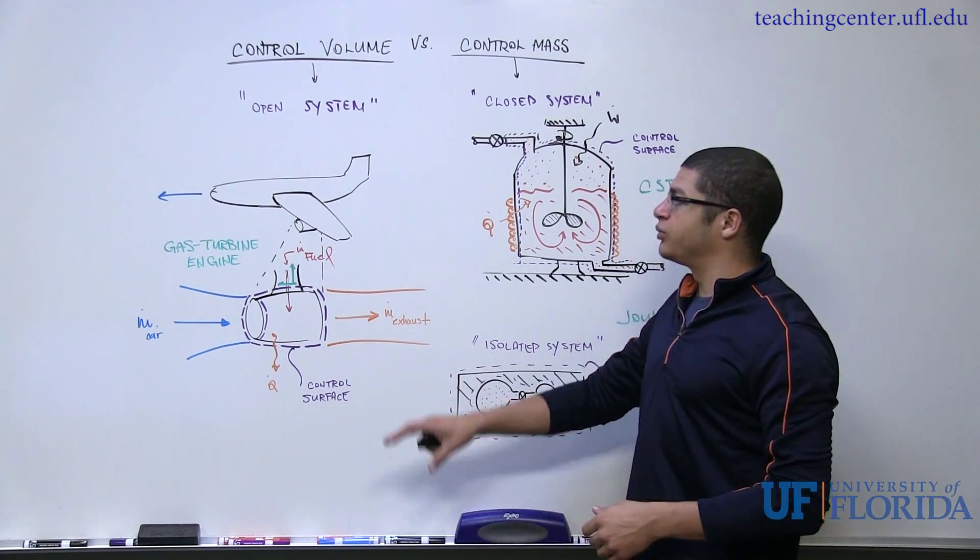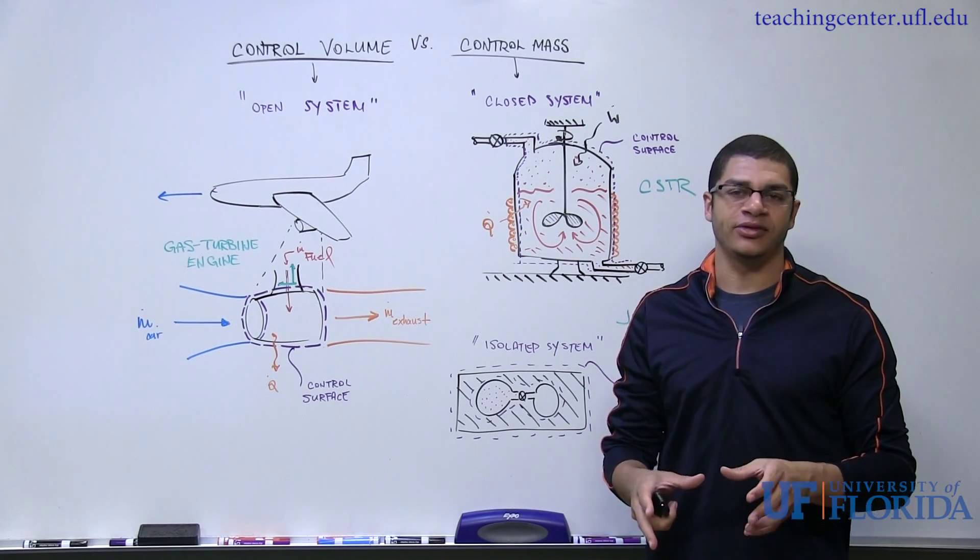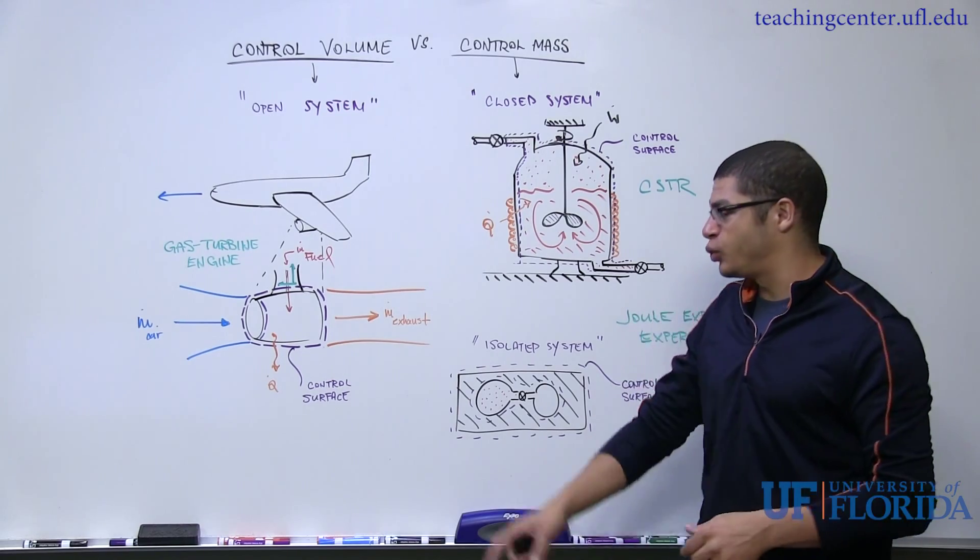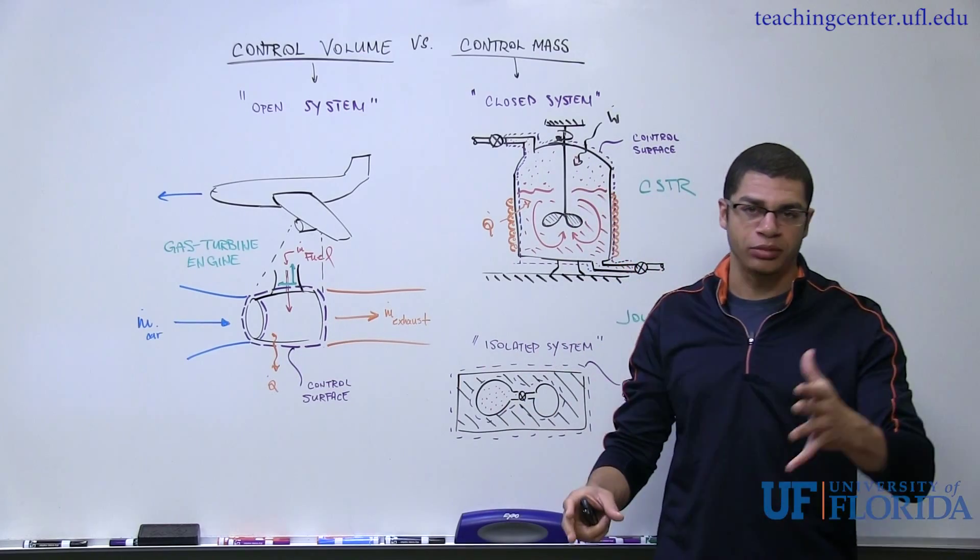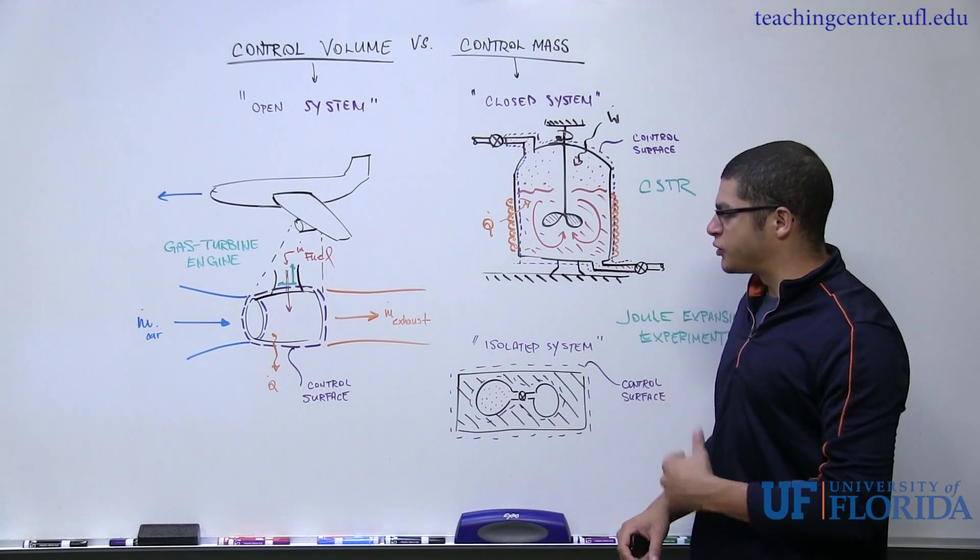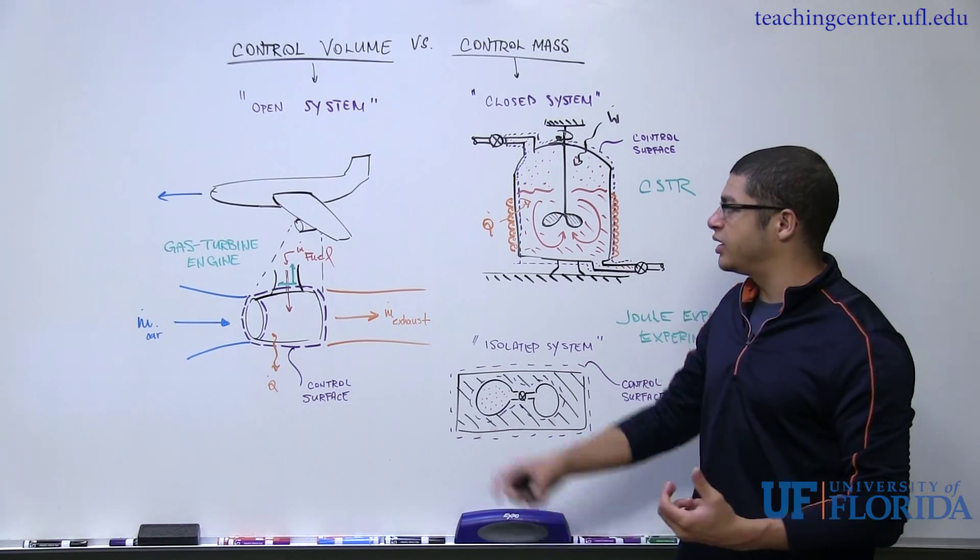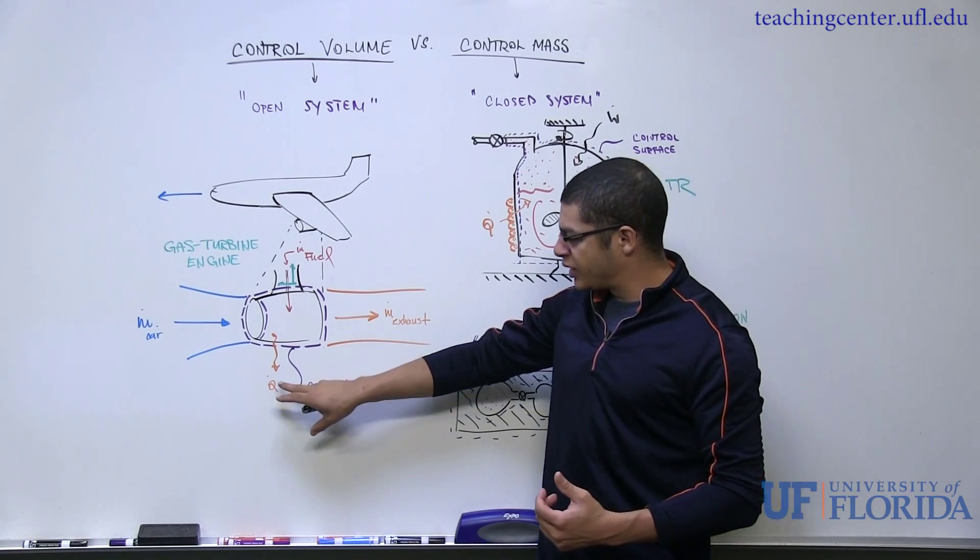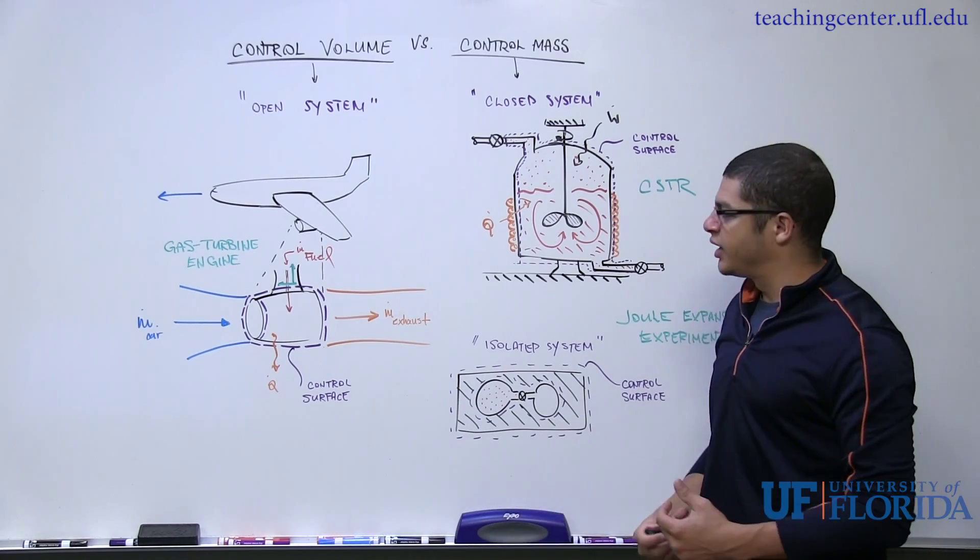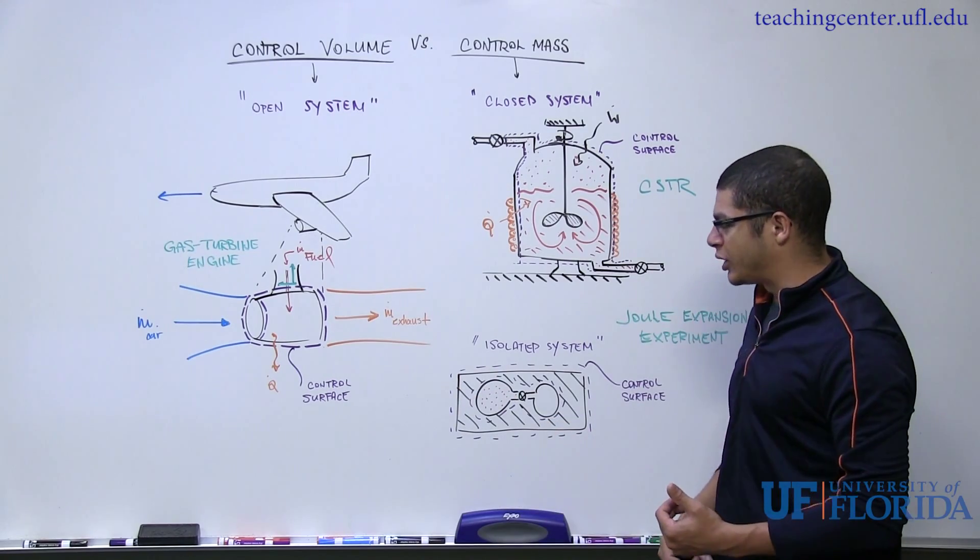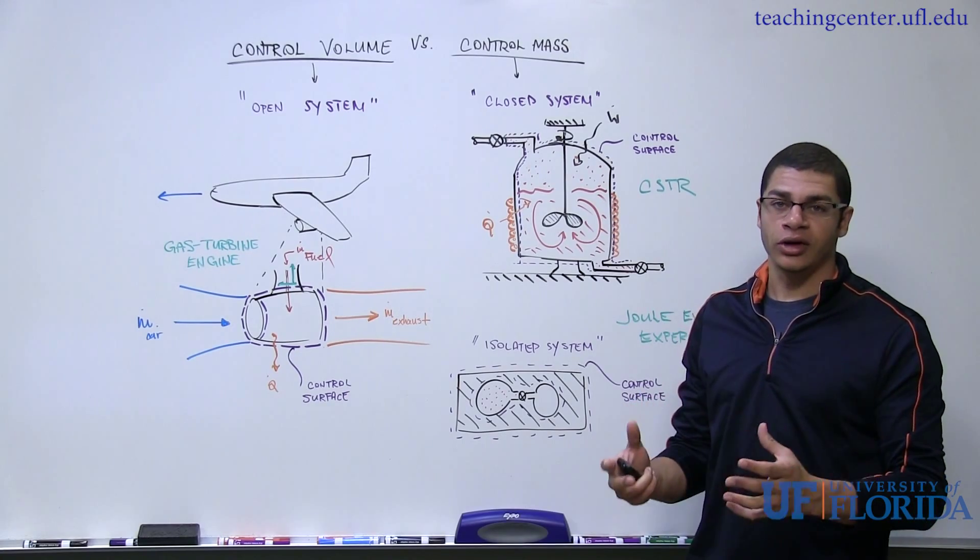Again, just want to emphasize though that for a control volume or open system, we really have no constraints on the types of energetic or mass interactions with our thermodynamic system. There can be any type of mass flow. I haven't shown an example of diffusion in this particular problem, but that's a type of mass transfer and we can handle it when we're dealing with a control volume. There could be energy fluxes in the form of heat or work. In this particular example, there is no work flux, but there could be for a control volume as well. But again, energy interactions and mass interactions are allowed.